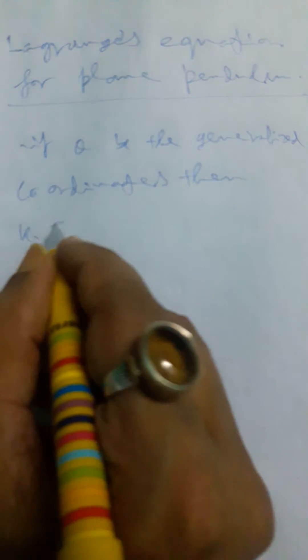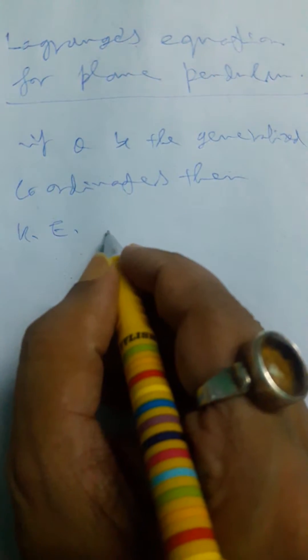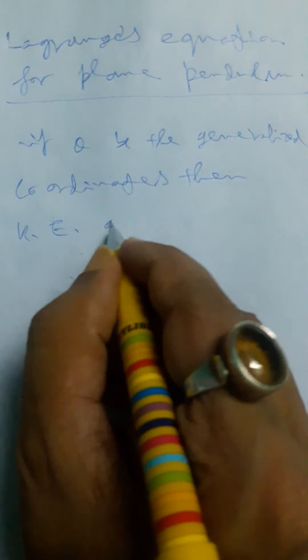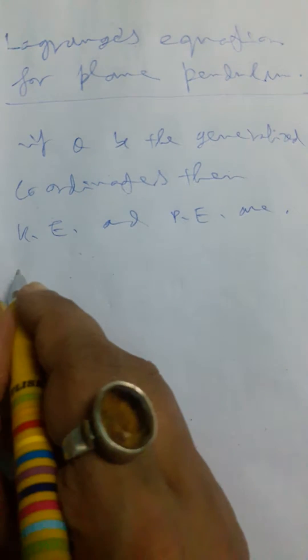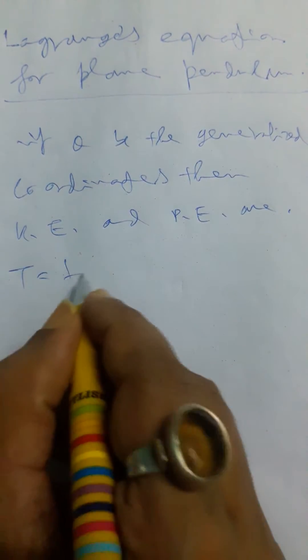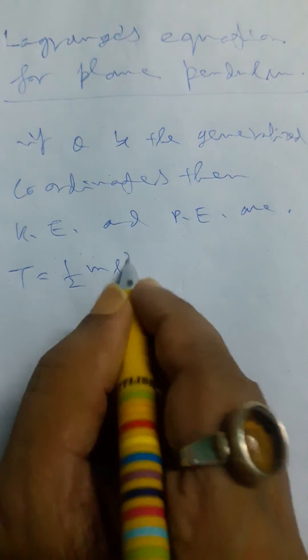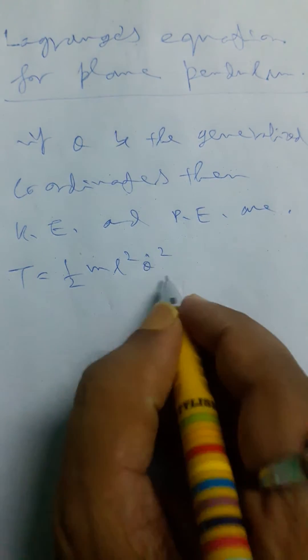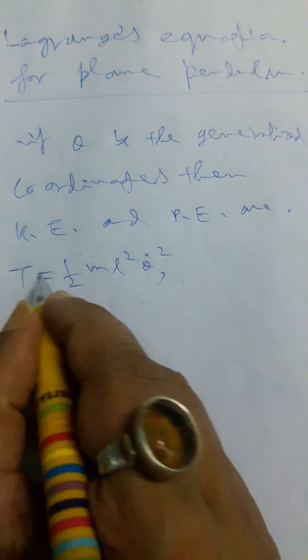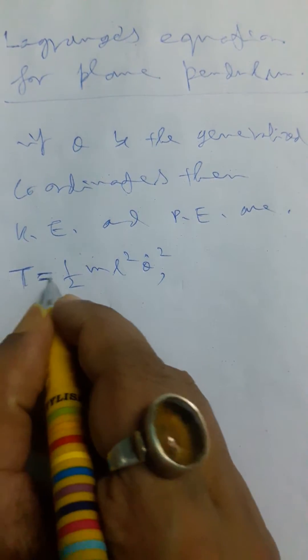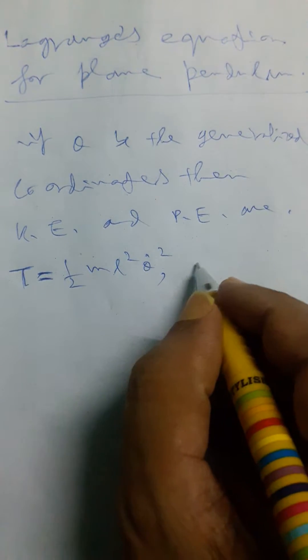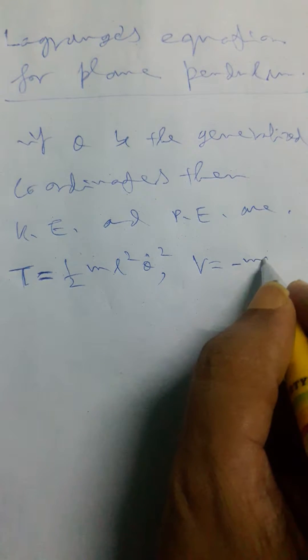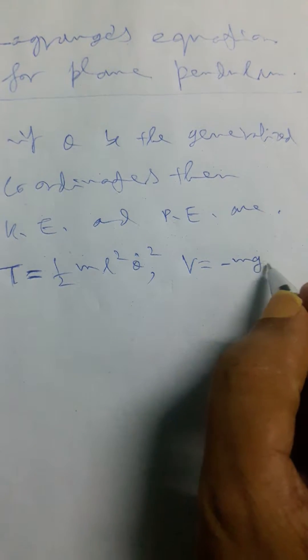The kinetic energy KE and potential energy PE are respectively T = ½ml²θ̇² and V = -MgL cos θ. I think we assume how it's come, we know.